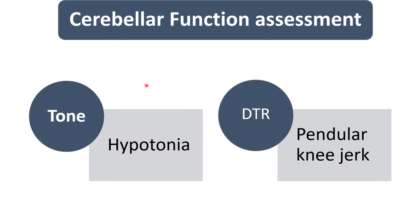Next, we assess tone. In cerebellar disease, the child will have hypotonia. We also assess deep tendon reflexes — the child will have a pendular knee jerk, which is characteristic of cerebellar disease.